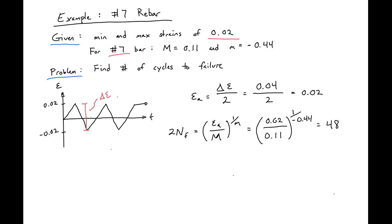If we're looking for the number of full cycles, n sub f, then we just divide by 2, and we'll see that we'll have 24 full cycles to failure. This would be our final answer for this problem.